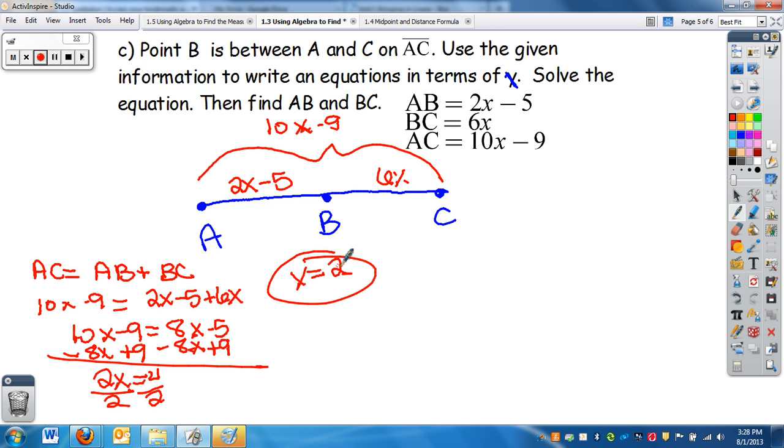All right, so we wrote the equation, we solved the equation, we get x equals 2, and now we need to find the length of AB and BC. So I can plug in 2 into each one, so AB, which equals 2x minus 5. I can replace the x or substitute the 2 in for x. And I get negative 1, and then BC equals 6x, so 6 times 2, which is 12.